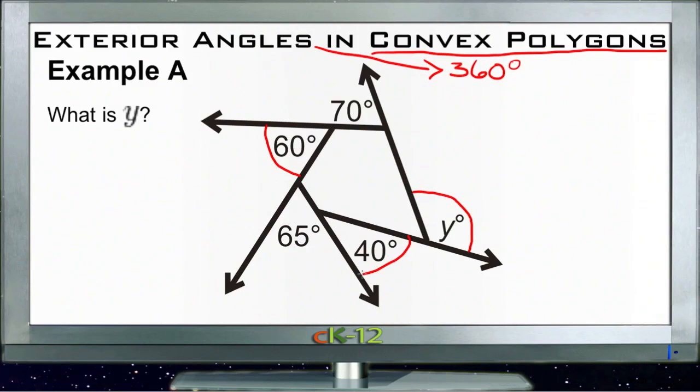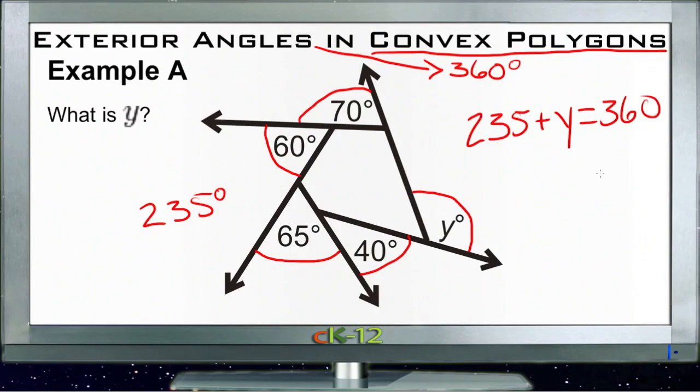170 plus 65 would be 235 degrees. So we have 235 degrees plus y degrees equals 360 degrees. We just need to solve for y. We'll subtract 235 from both sides, which gives us y equals 125 degrees.